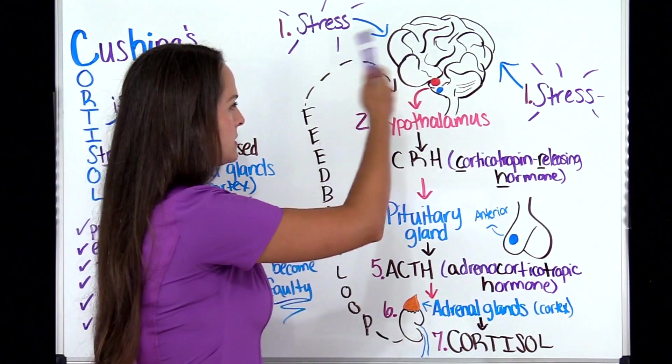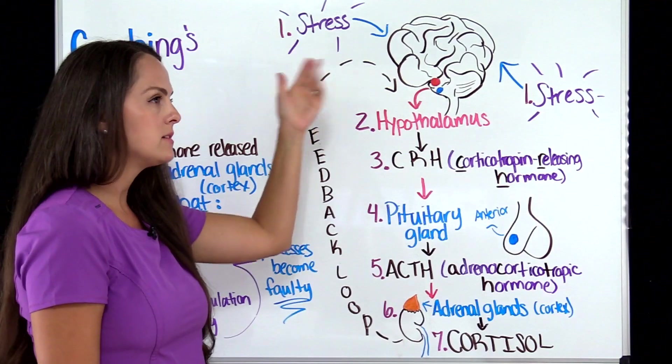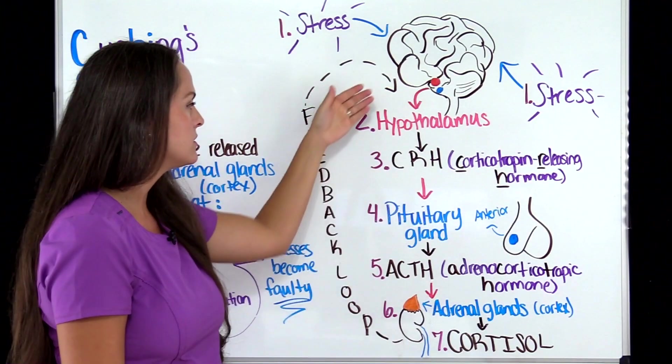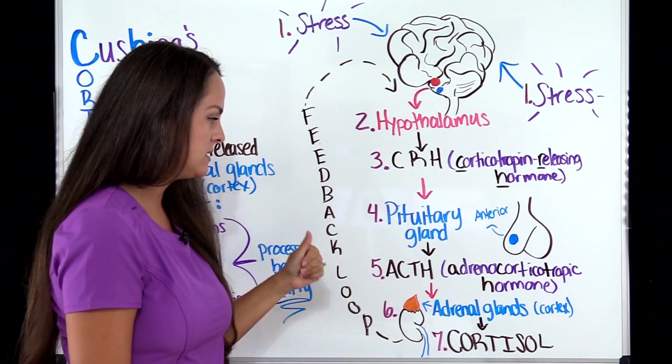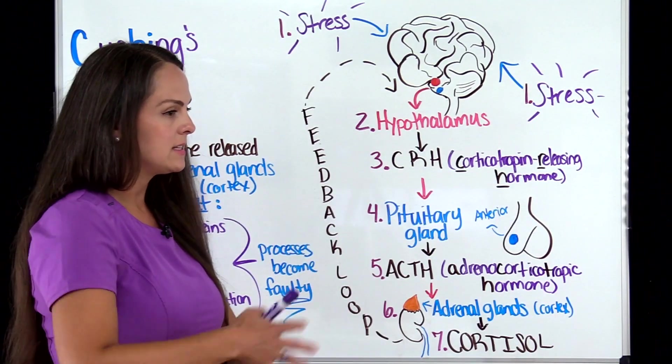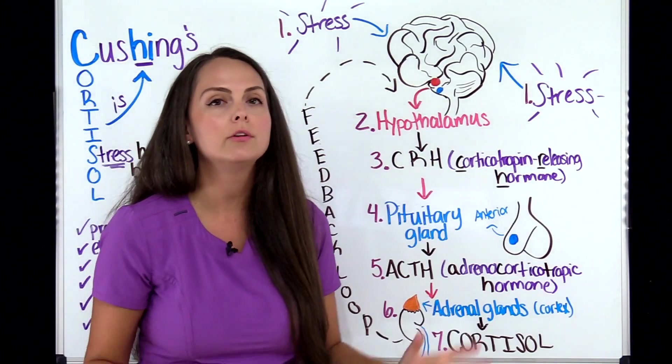So this feedback loop sends that information up here to our hypothalamus. It says, okay, so I'm going to quit my production of CRH, which in turn will cause pituitary gland to quit its production of ACTH. And then once it's needed again, this whole system will kick back in. And normally it should work beautifully together.